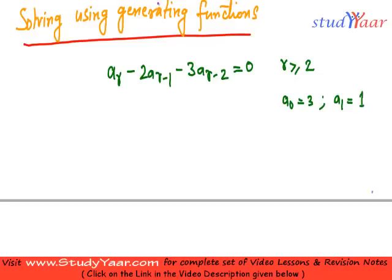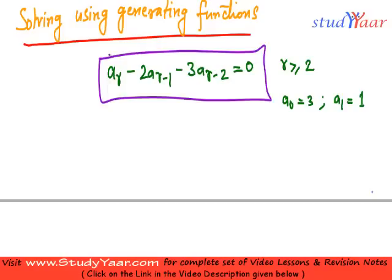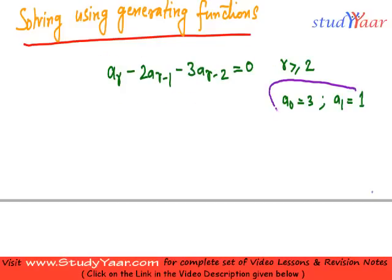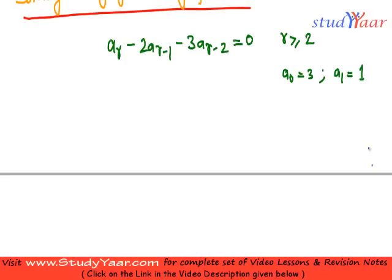Now we are going to understand how we can solve a recurrence relation using generating functions. So let us suppose I have been given this particular recurrence relation with these initial conditions and I need to solve it. So let us see how we are going to do it.